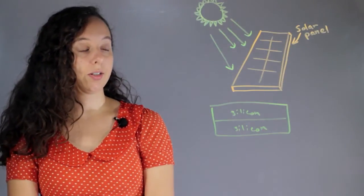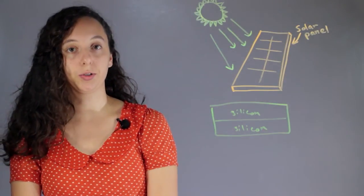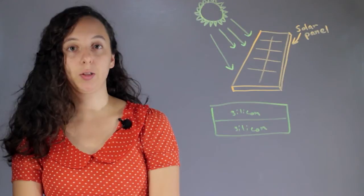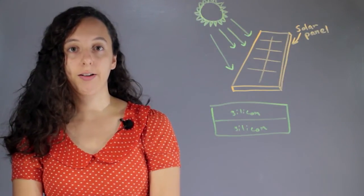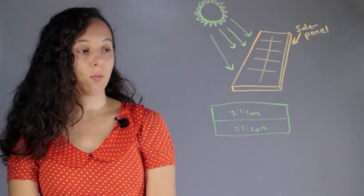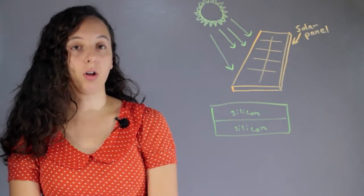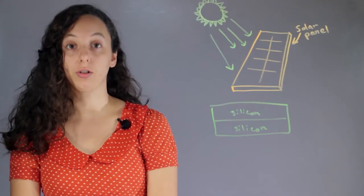And so silicon is picked for solar panels because it has a very specific way of all of its electrons forming a grid. So one electron doesn't belong to one silicon, they kind of are all shared.